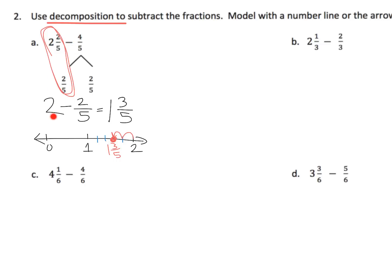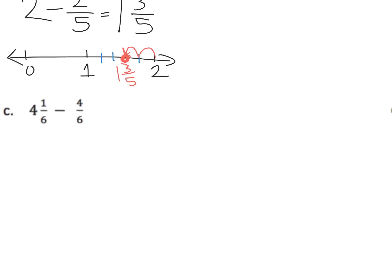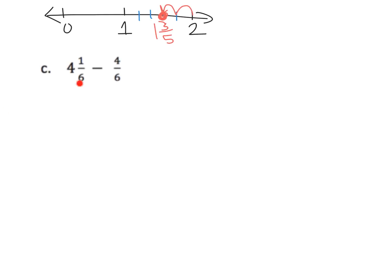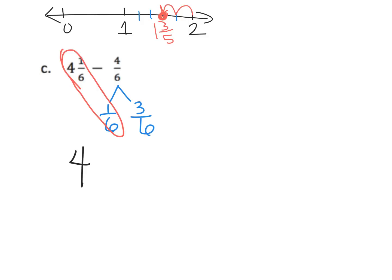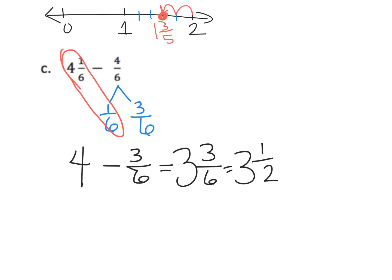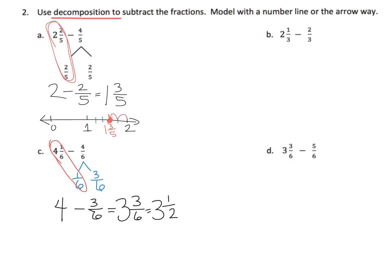The first step knocks it down to a whole number, then you subtract whatever is left. Let's take a look at question C. We're going to decompose in order to knock this number down to a whole number. We decompose the four-sixths into one-sixth and three-sixths. The reason I chose one-sixth is so that four and one-sixth minus one-sixth gives us four. Now we're ready to subtract three-sixths.